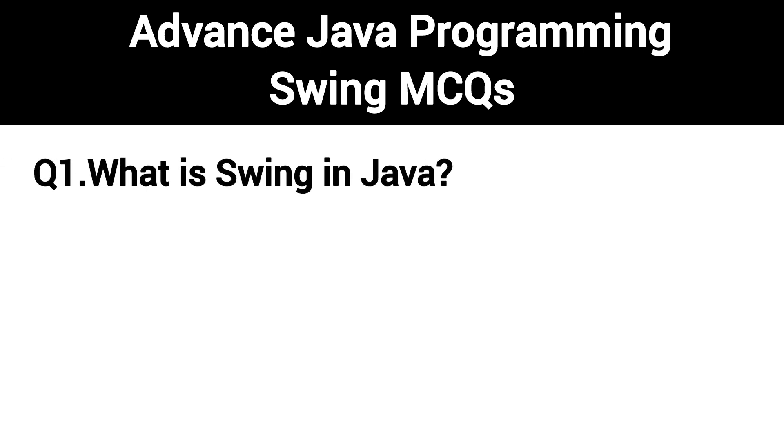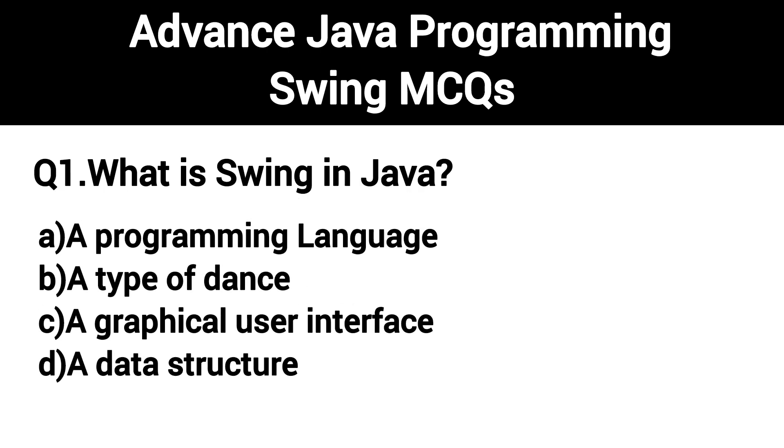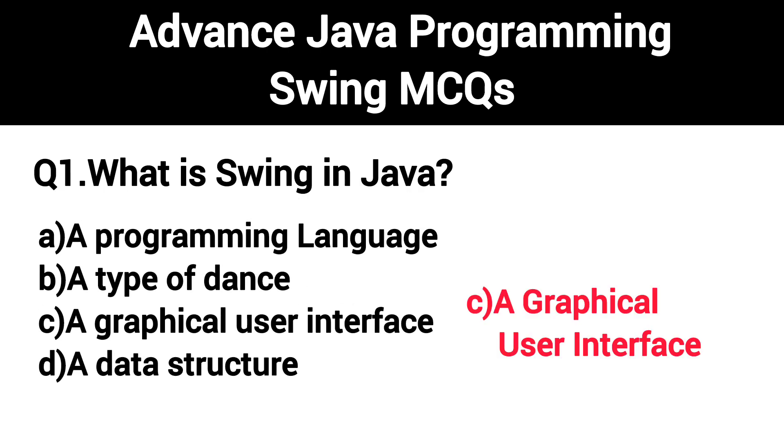Q1. What is Swing in Java? The right answer is Option C: A graphical user interface.